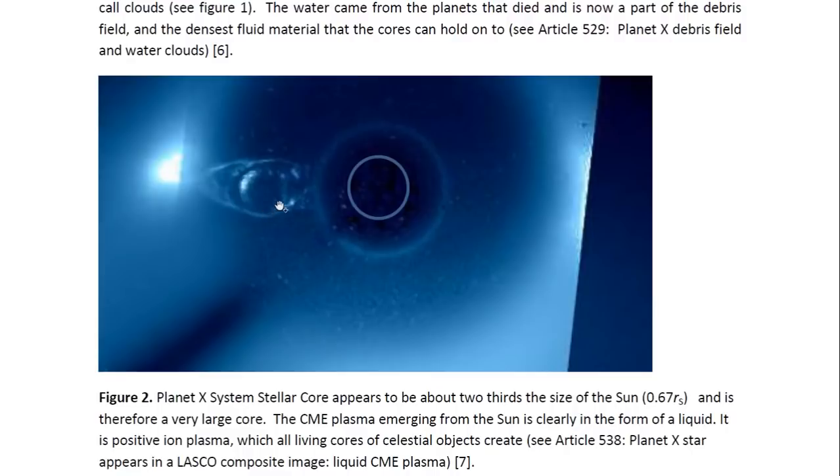Now here you see, this is a composite LASCO C2 and C3 image. And you can see, the sun is here. This indicates the size of the sun. This is one of the Planet X systems stellar cores. And as you can see, it's enveloped in CME plasma. Because these objects provoke the sun into these events.